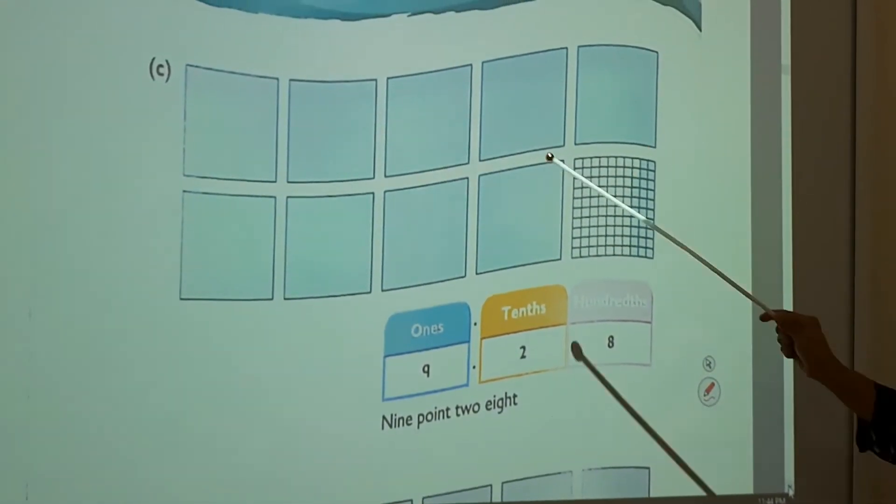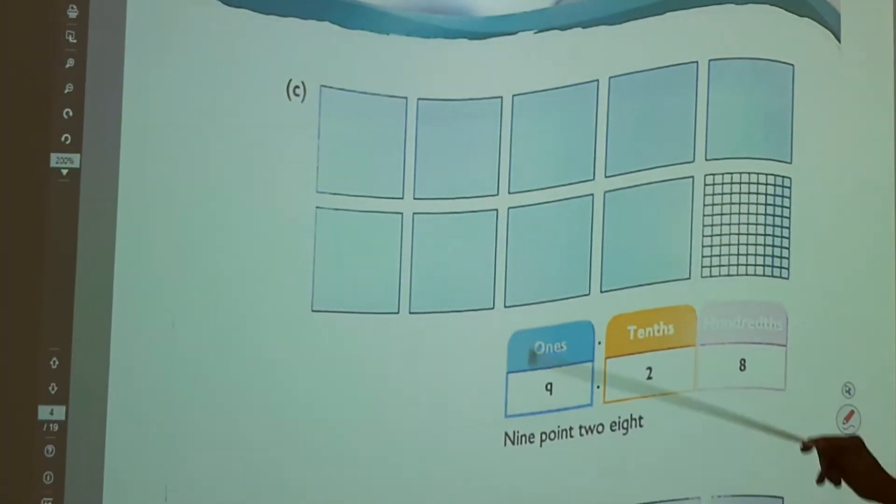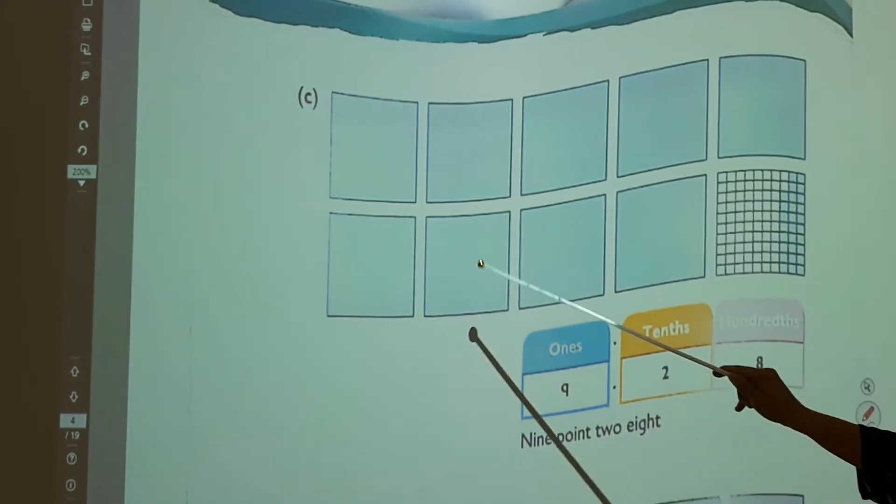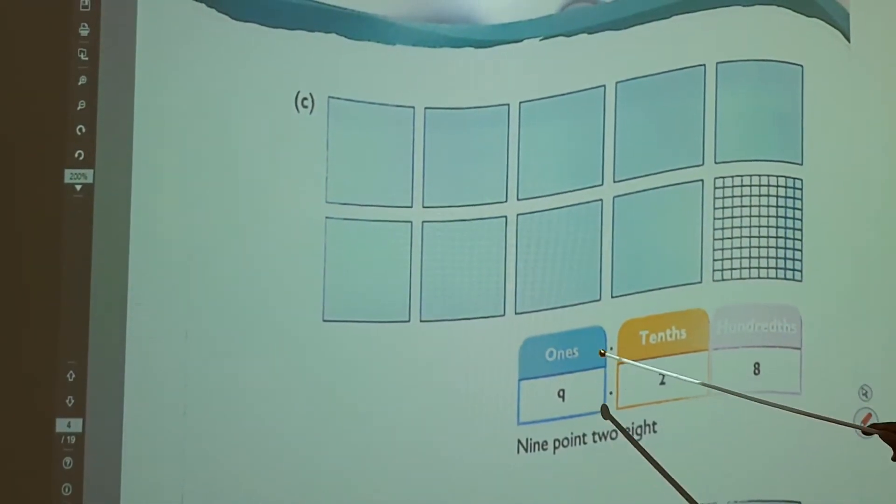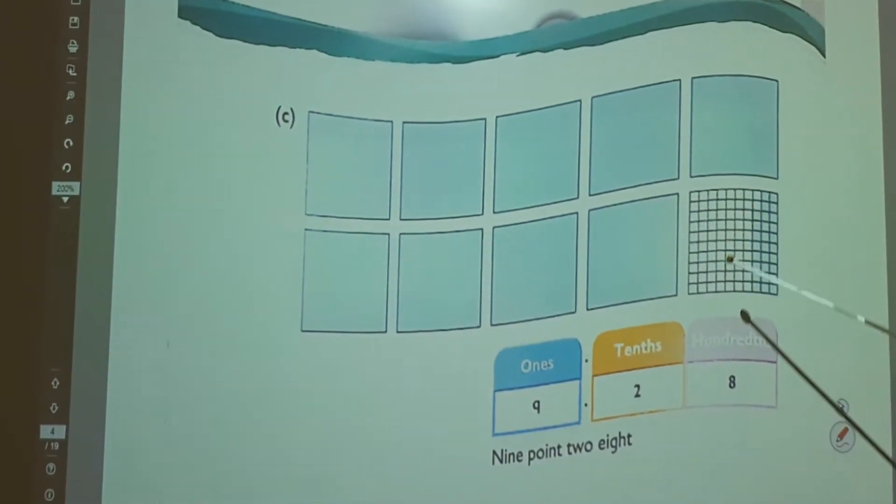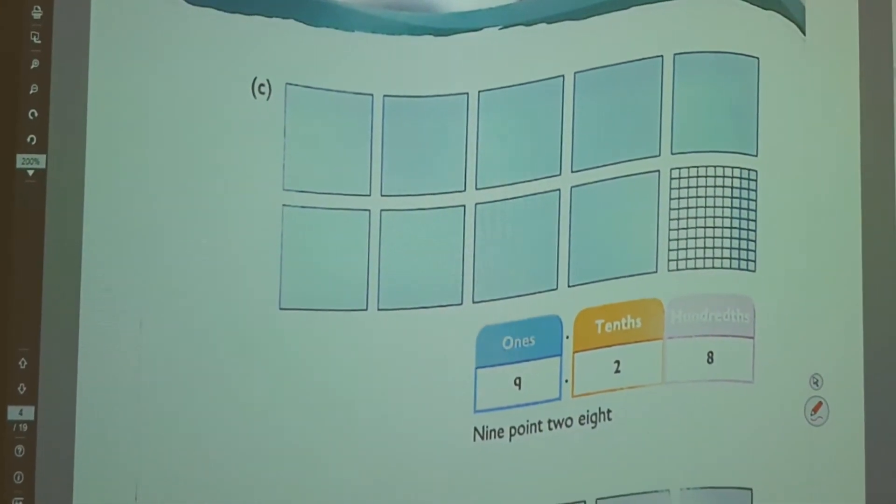Again, coming to this example, see how many whole numbers we can see here? That means full thing. How many we can see? 1, 2, 3, 4, 5, 6, 7, 8, 9. That is 9 whole numbers. I write in the ones place, 9. Again here, the full thing is divided into how many pieces? It is divided into 100 portions.